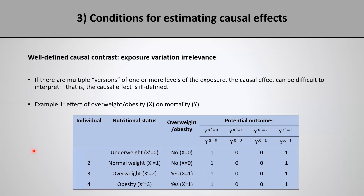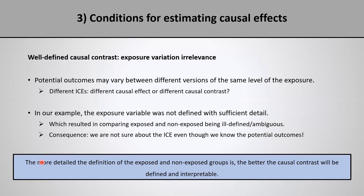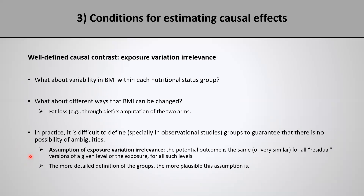In our example, we would say: I know that overweight or obesity yes-or-no is a very vague thing, so it is very likely that I have different versions of the exposure within each subgroup. But I am going to assume that those different versions have the same potential outcomes, so I have no ambiguity in the individual-level causal effect. This assumption is perhaps not very plausible with the overweight or obesity definition, but it might be more plausible if I use the nutritional status definition, because it is more refined. The point is that the more detailed the definition of the exposed and non-exposed groups, the better — and if those groups are defined with enough detail, it may be safe to assume exposure variation irrelevance.